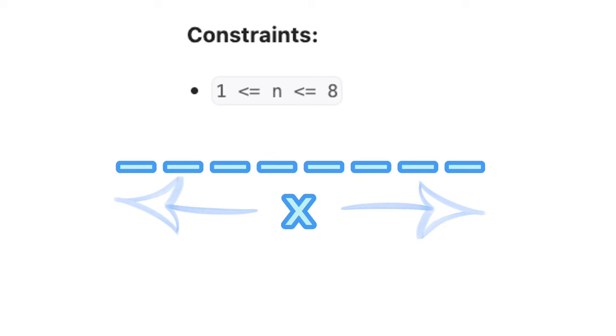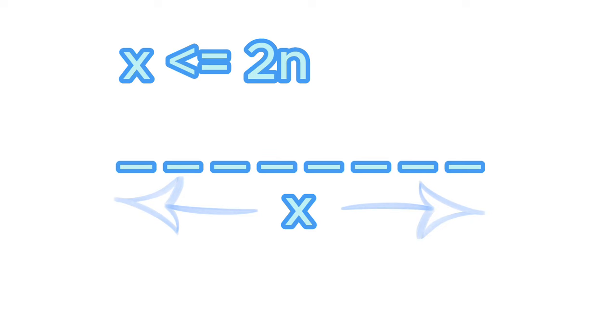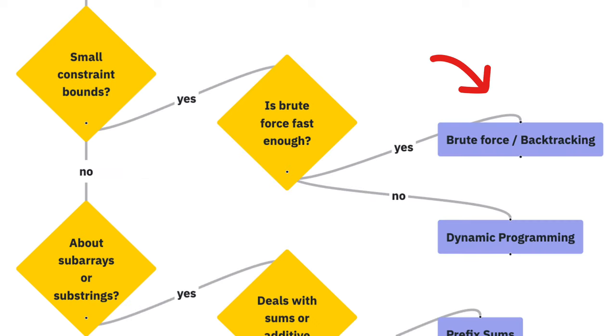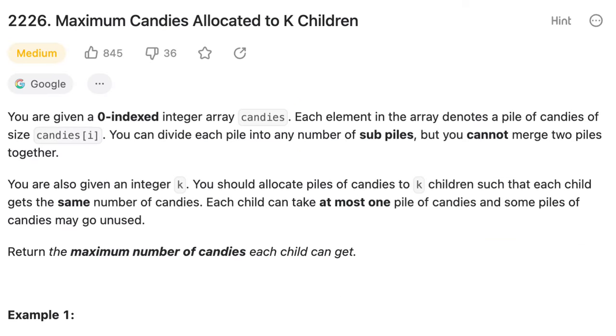Next we need to consider if a straightforward brute force solution could be successful. At each index in the string, we have the option of inserting either an opening or closing bracket. Therefore, we should account for 2 to the power of x strings in total, where x is the length of the string. Given that n is less than or equal to 8, the length of the string is less than or equal to 2 times n, which is 16.